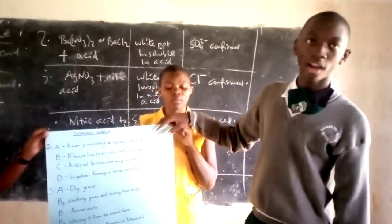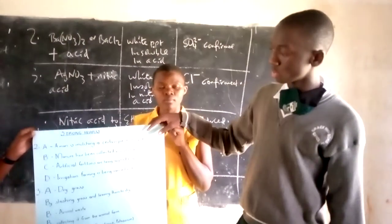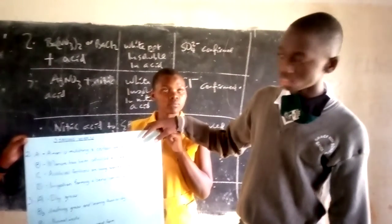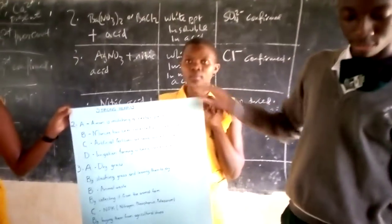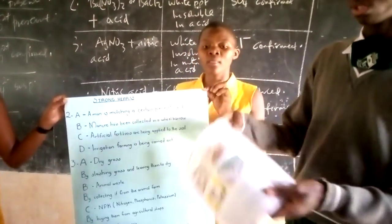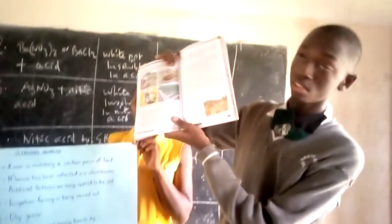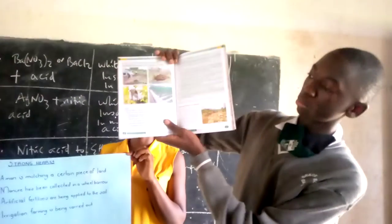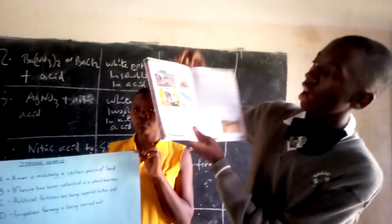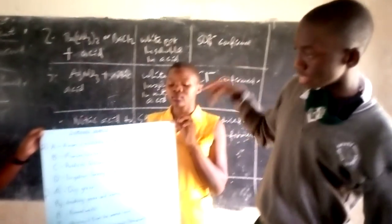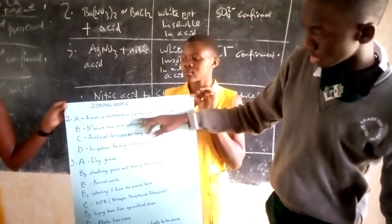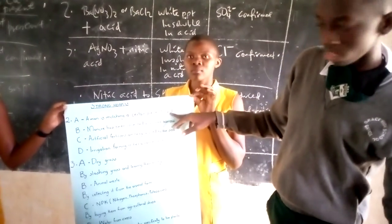So, in our Part 1, we were asked to identify what was happening in the pictures — specifically these ones you see here, these ones that are here in the book. Our Part A: we found out that a man is mulching a certain piece of soil.